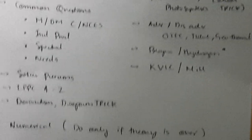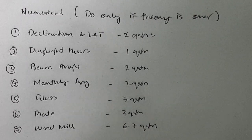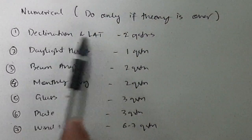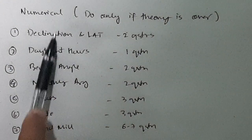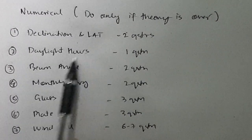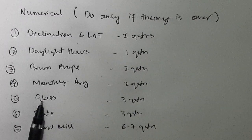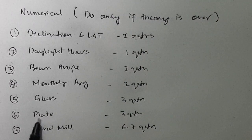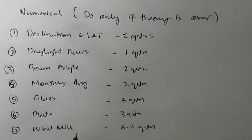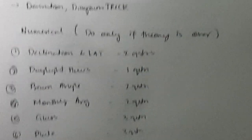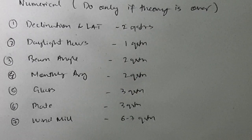Let's move on to the numerical part. In numerical part, do only if the theory is over. I have prepared a list of questions which I'll be uploading soon. What you can study is: declination and LAT (this is the declination and this is the local apparent time, also known as local solar time), daylight hours, beam angle, monthly average, glass (for calculating different parameters and finally arranging them in a logical sequence), plate and windmill. In windmill, the questions are regarding the power density of the wind and all. I'll be discussing that in a separate video. But this is what the numerical consists of. If you study this much, you can get around 70 marks. If you study at least two or three topics from this one also, at least you can get 10 to 15 marks. So you can get 85 marks - that's a very good marks given that you are just studying this much.